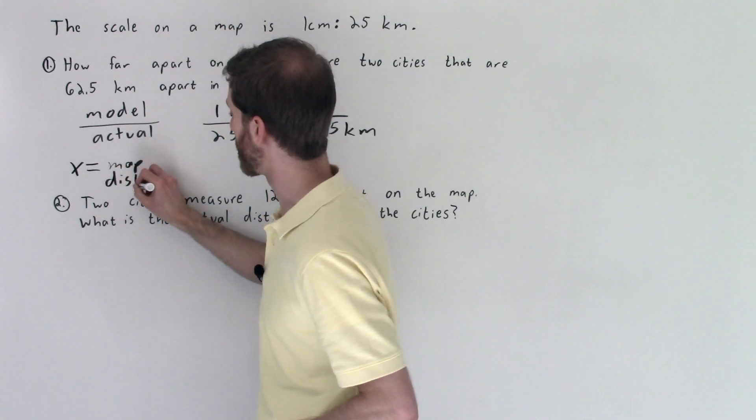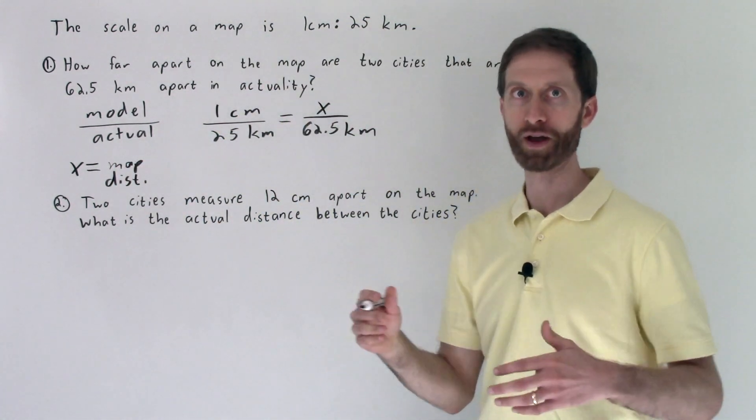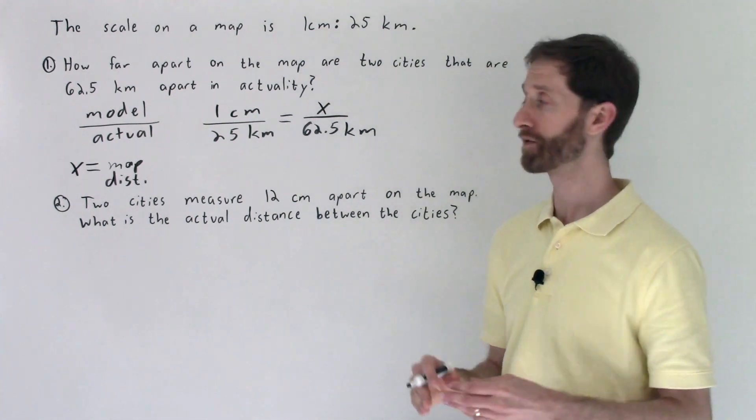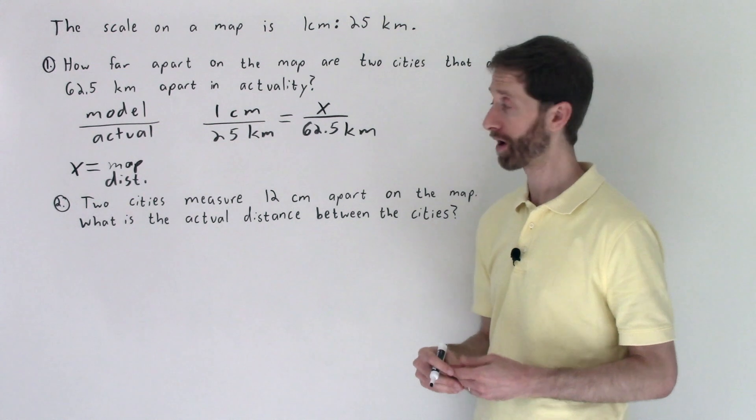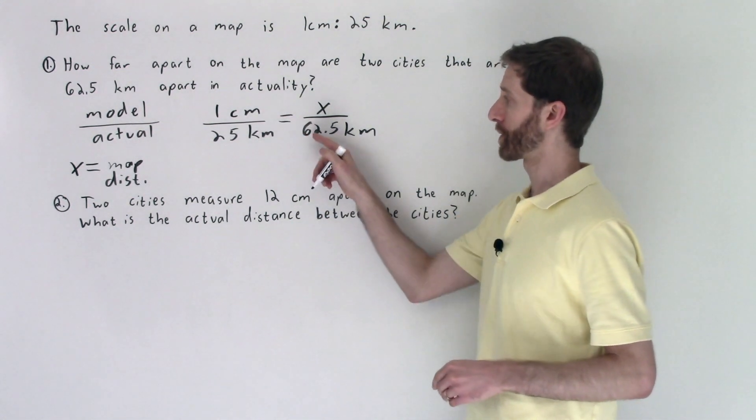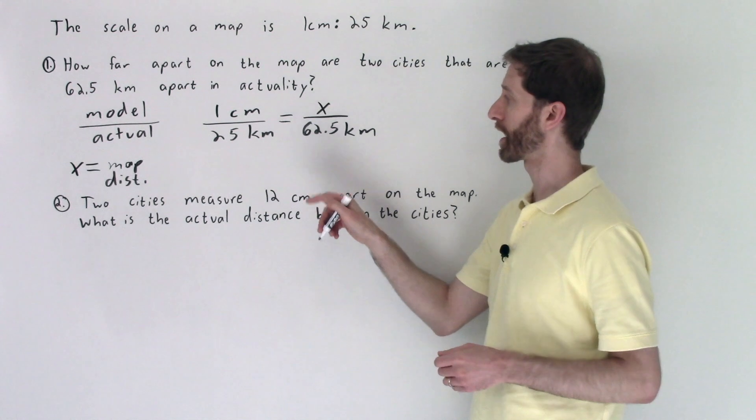But you might need to write it out in four words if you have one of those very formal teachers, which is great if you do. So now we've got ourselves a proportion and all we have to do is solve that proportion. Next we cross multiply. Nothing to simplify on either side.